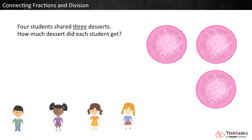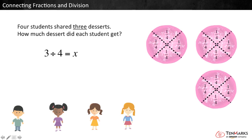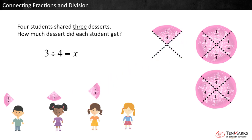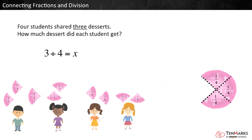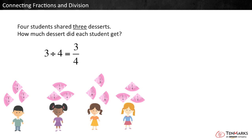Look at another example. This time the same four students are sharing three desserts equally. How much dessert does each student get? A division equation that represents this problem is 3 divided by 4 equals x. Each dessert will be shared four ways. When we pass out the fourths, we see that each student gets 3 pieces, or 3 fourths of a dessert.